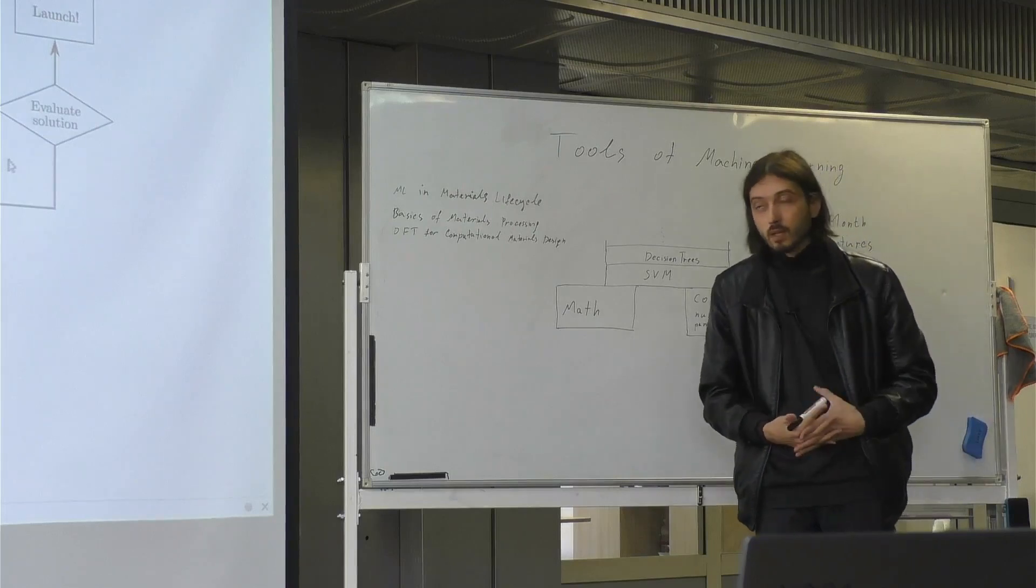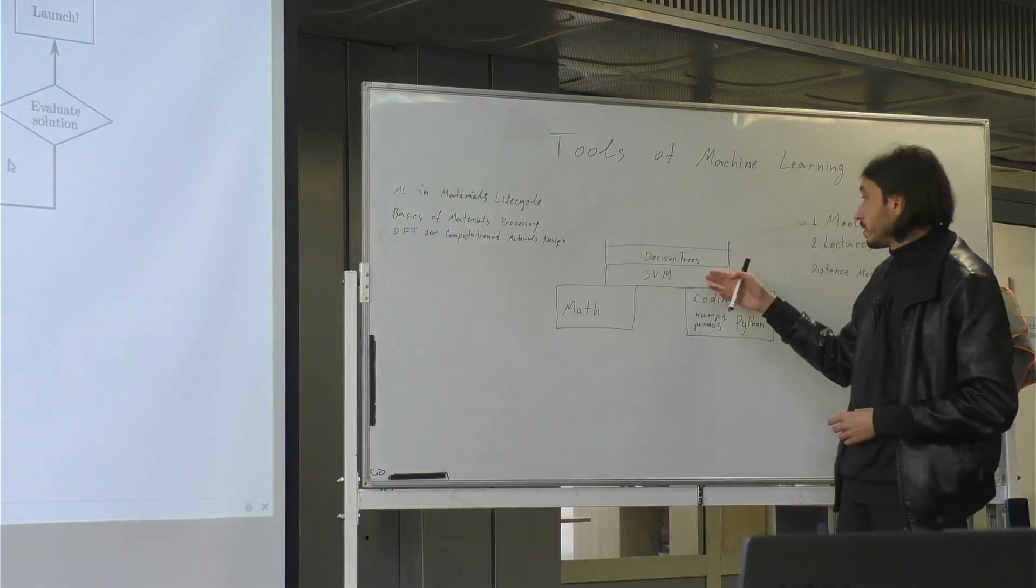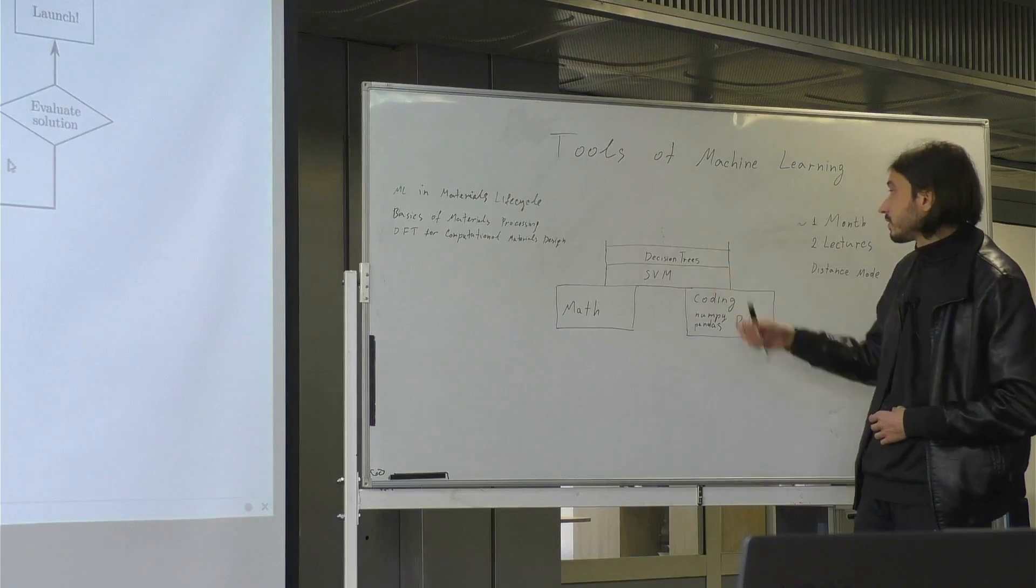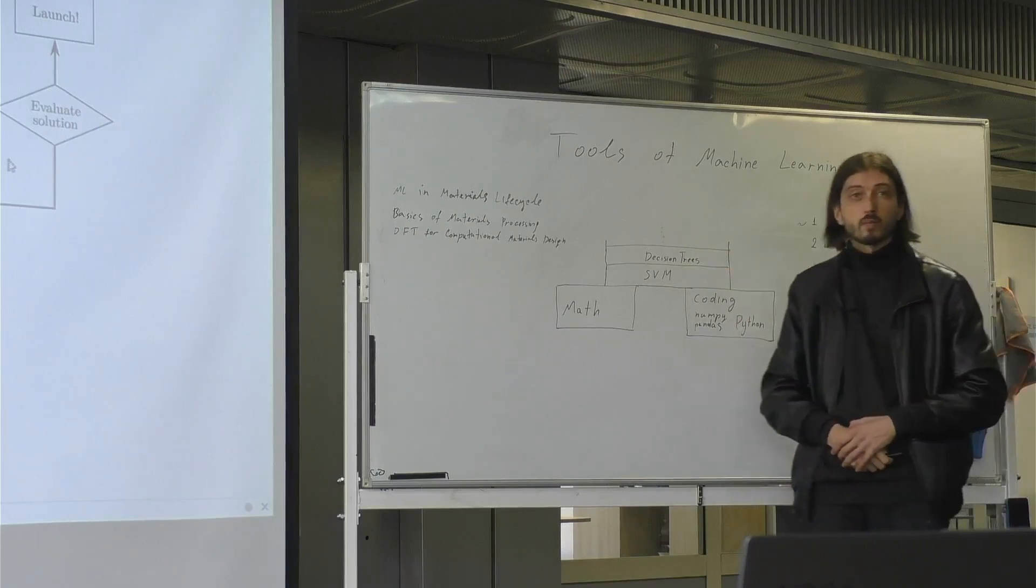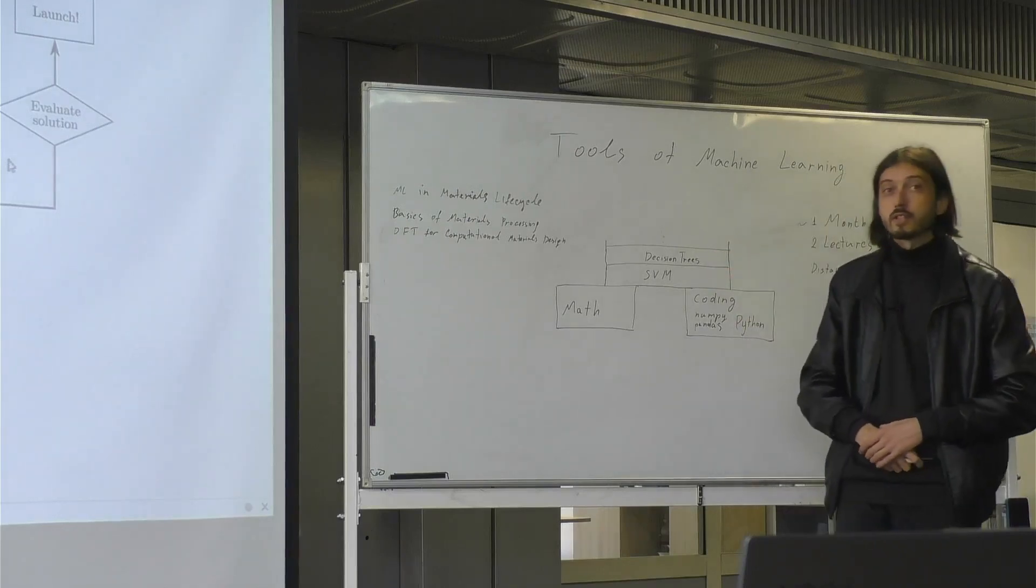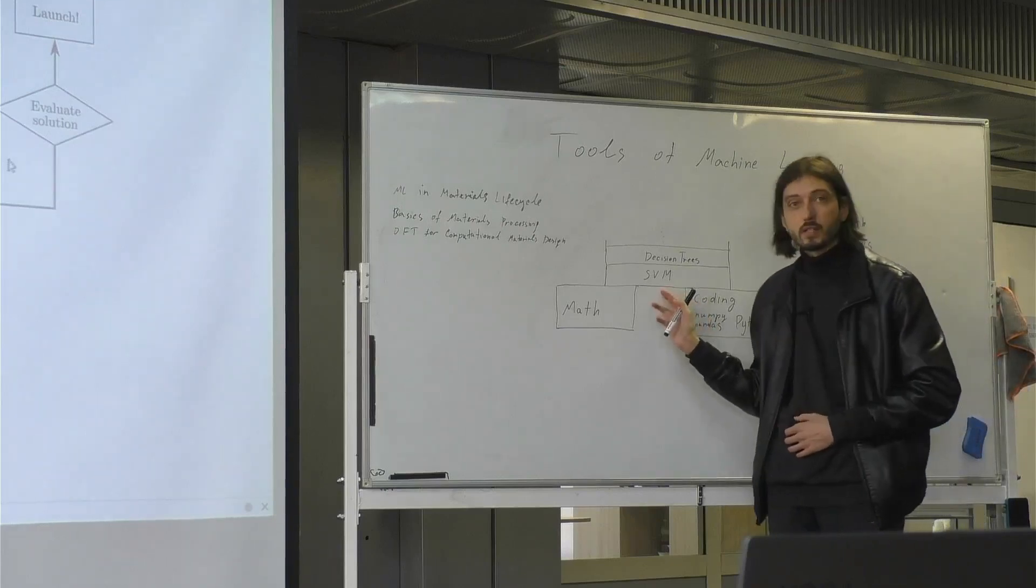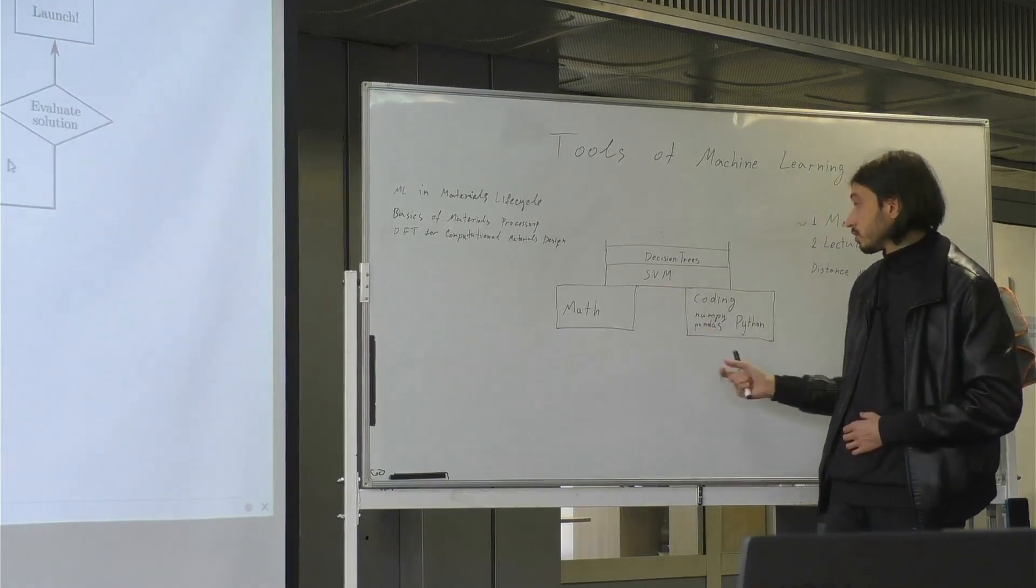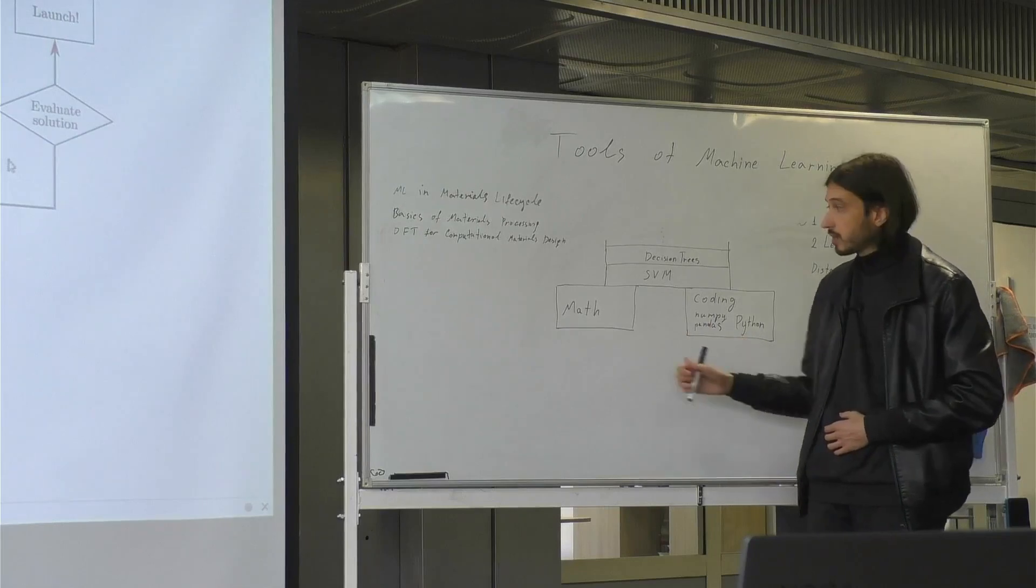Machine learning consists of different methods like support vector machines, neural networks, decision trees, and so on. They are all based on two cornerstones: you should be able to code and you should know some mathematics.